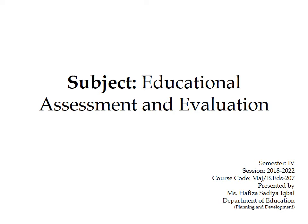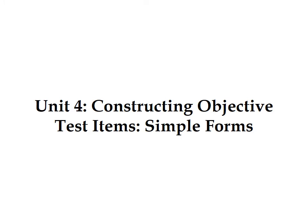Assalamualaikum. Today we will discuss unit number 4: Constructing Objective Test Items — Simple Form. This chapter discusses the objective test items and their different uses, advantages, limitations, and rules for construction of different objective test items. This chapter also discusses the simple forms of objective test items, which include the two-choice, short answer, and matching exercises.